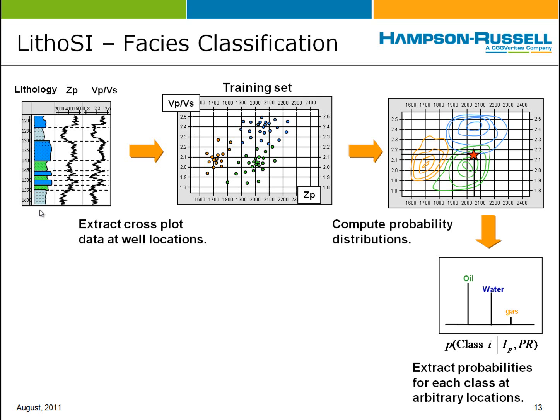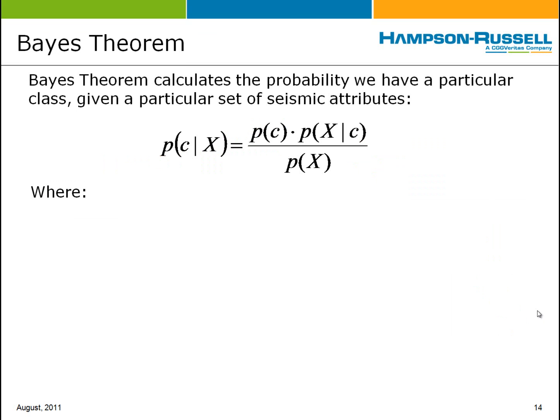From the probability distributions, we calculate at every single point the probability of each of the classes. For example, if I'm interested in the star point, the probability of oil and water are similar to each other because of the overlapping clouds, but the probability of gas is much lower. The mathematical tool used to calculate the probability distributions is Bayes' theorem.